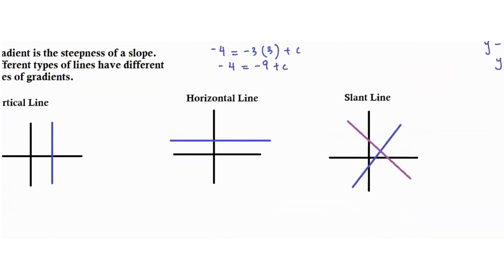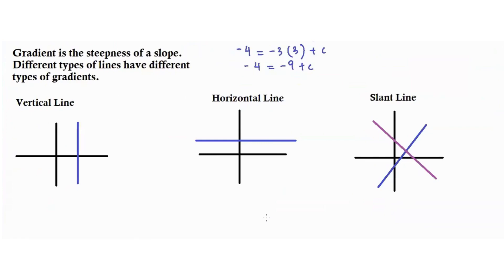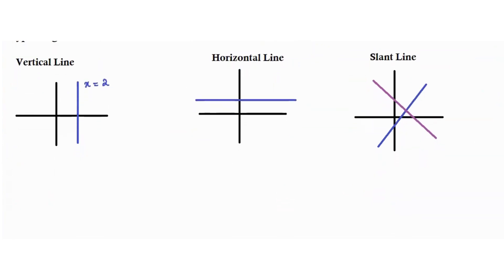Now talking about the gradient — gradient is basically the steepness of a slope. We have different types of lines, each with a different type of gradient. Looking at the first line, the vertical line, let's assume it is x equals 2. To find the gradient, we pick two y values: y is 3 at one point, and y is 0 at another.